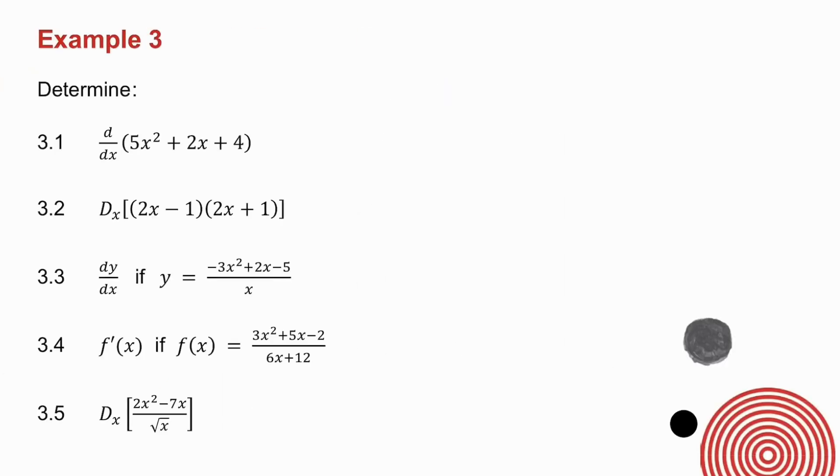Example number three, I ask you to determine five derivatives, and you will notice I've given you different notations. So what you need to do is you need to try and find the derivatives. In some of them, you will need to do some manipulation before you get the derivatives.